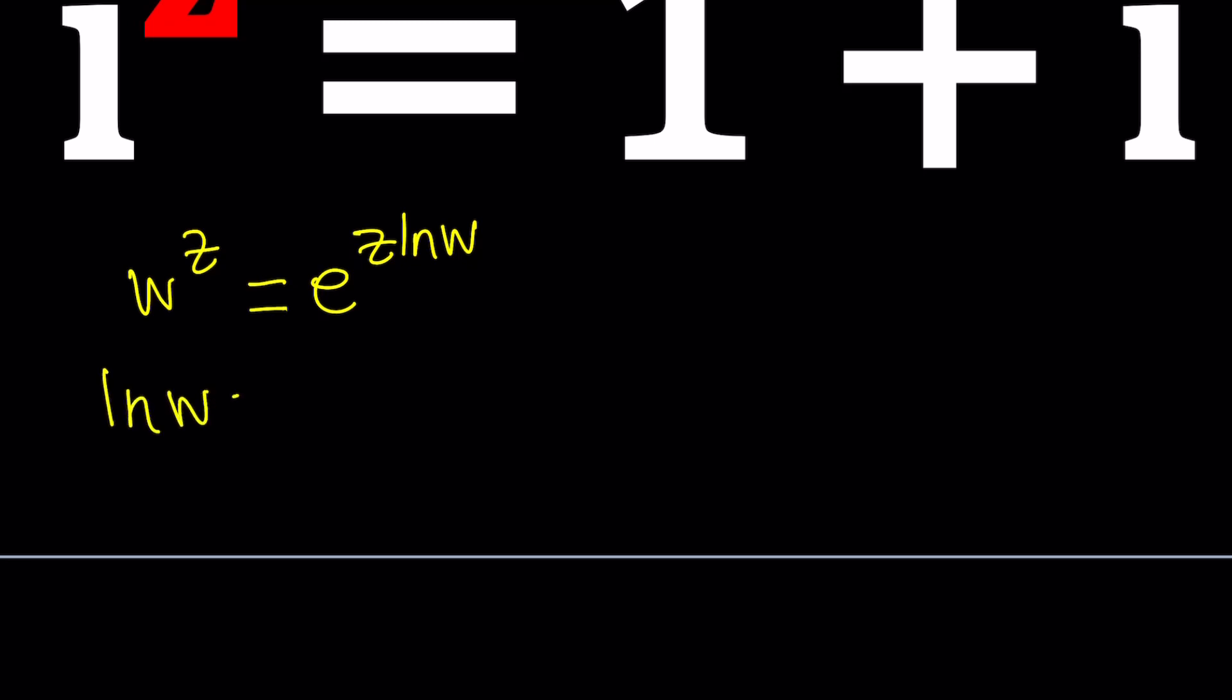And ln of a complex number can be defined as ln of the absolute value of W, which is, by the way, a real log, plus i times the argument of W. And the argument of W obviously has infinitely many values, so we're going to talk about that as well.